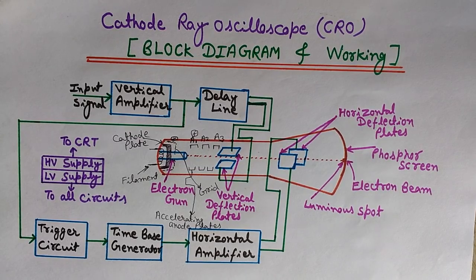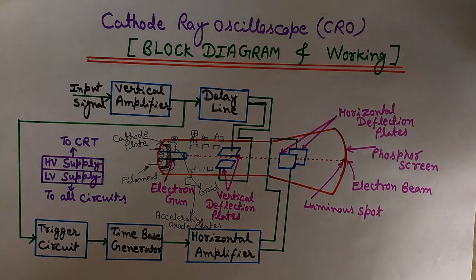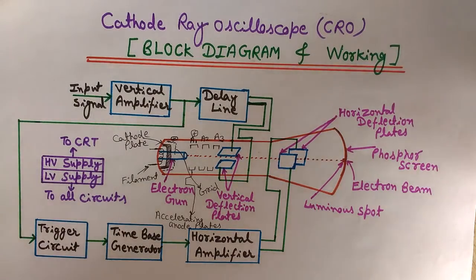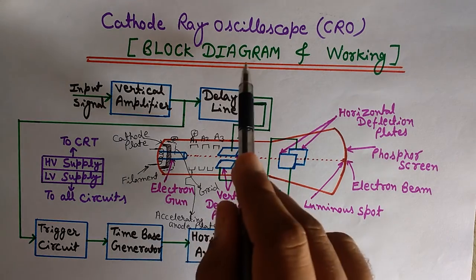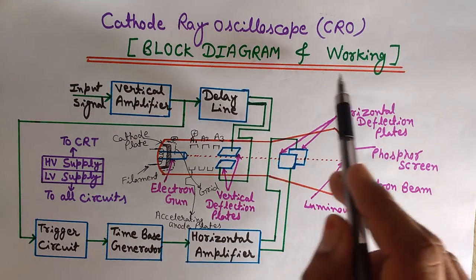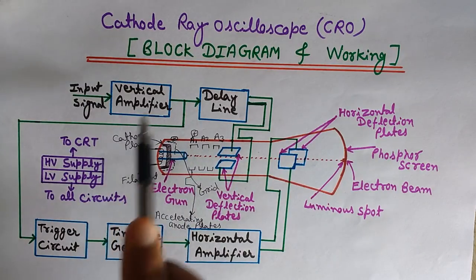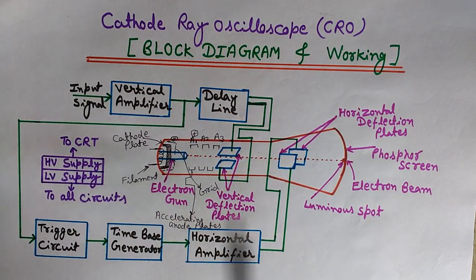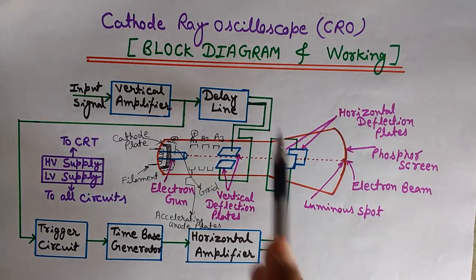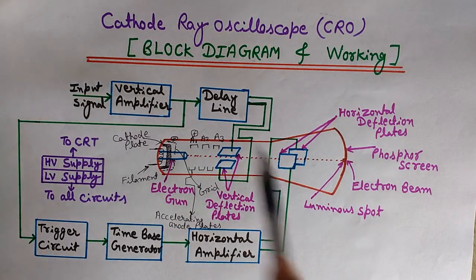Hello friends, you are watching Engineering Made Easy. I am Lalith. Today we will learn what is CRO — it stands for Cathode Ray Oscilloscope. Here we will discuss its block diagram and working, and see what is the function of each block.